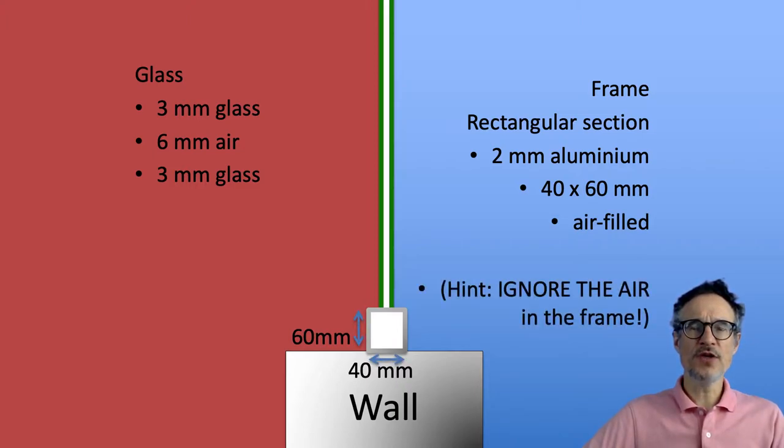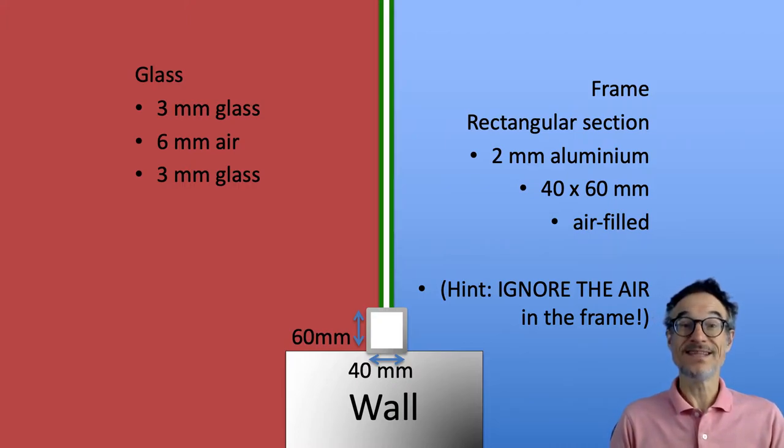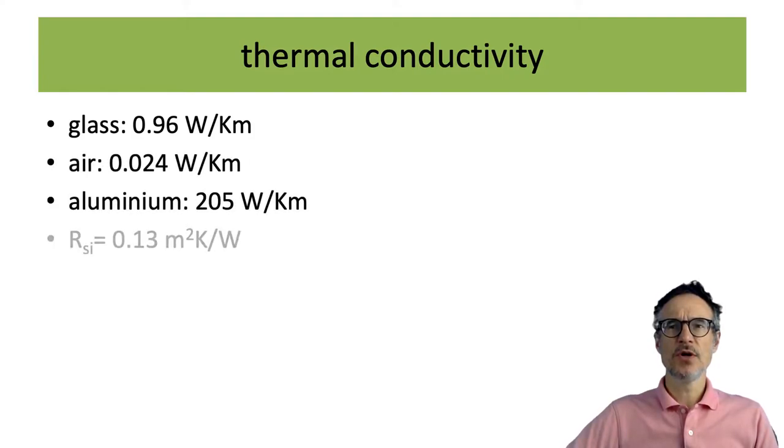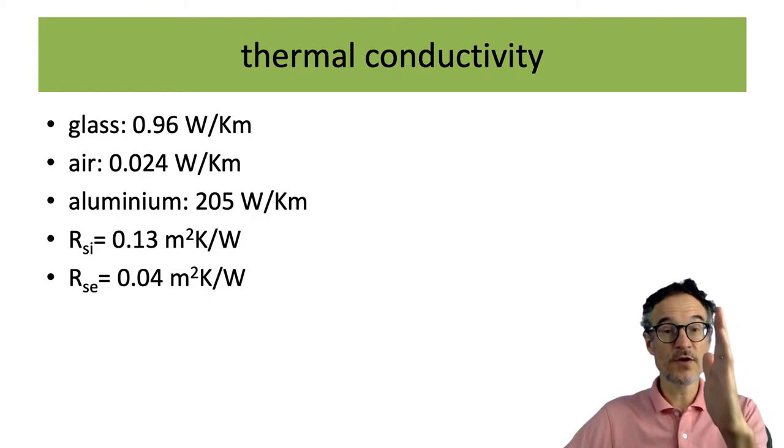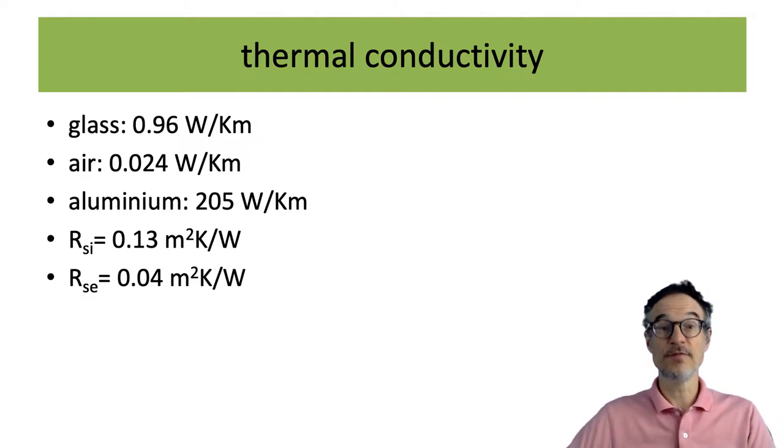When we are doing the calculations, because aluminum conducts much, much better than air, we can basically ignore the air for the calculations, which makes it a little bit easier. So here are the thermal conductivities. And that's the surface resistance on the inside, and that's the surface resistance on the outside. So we have to remember when we have a window, the window is also stopping air on each side, so that's going to have an effect on the insulation performance.